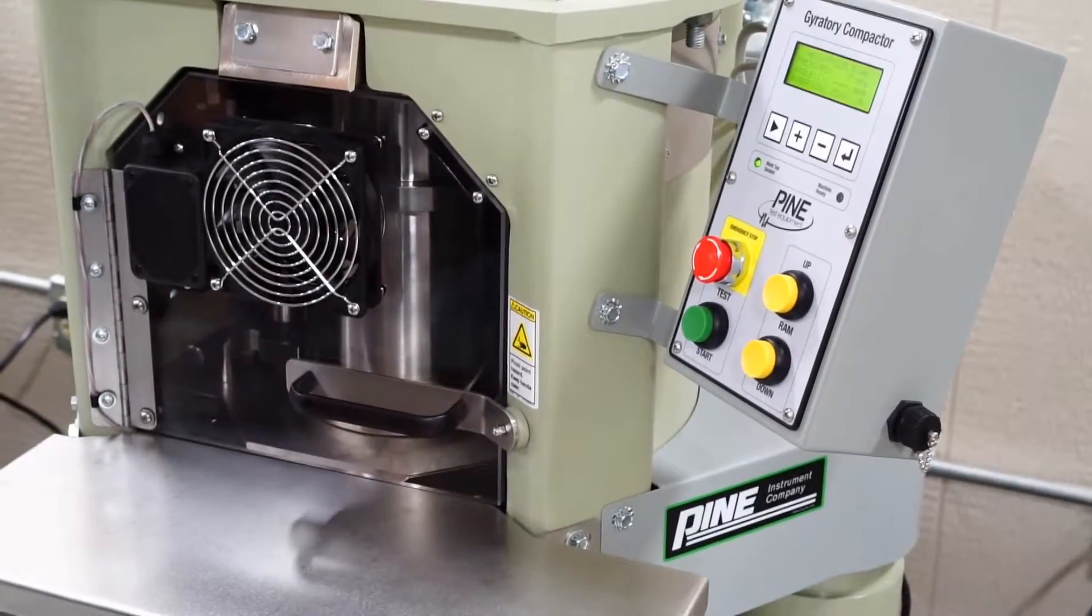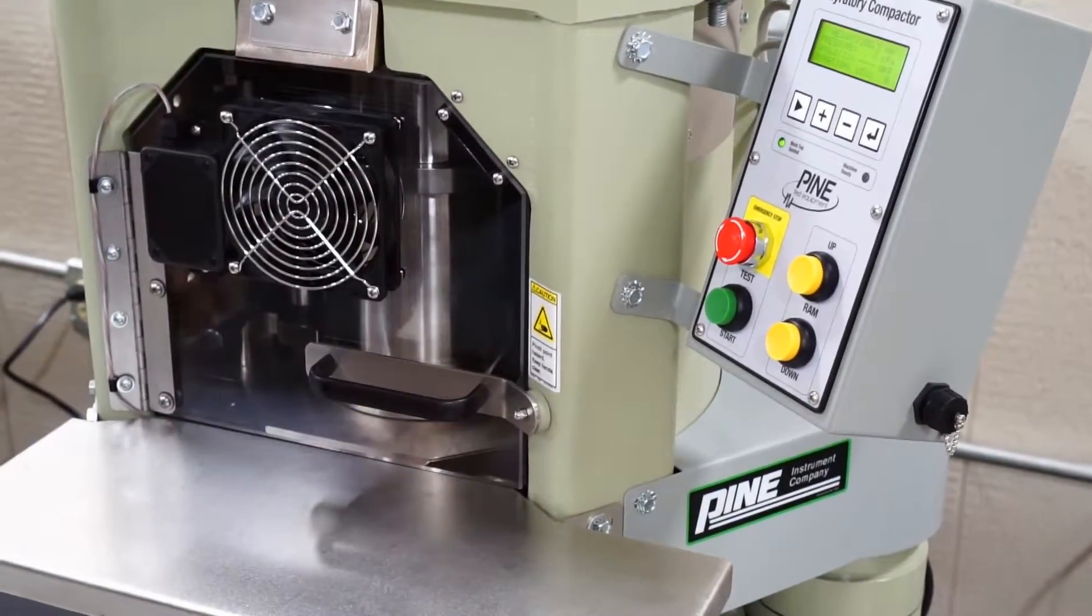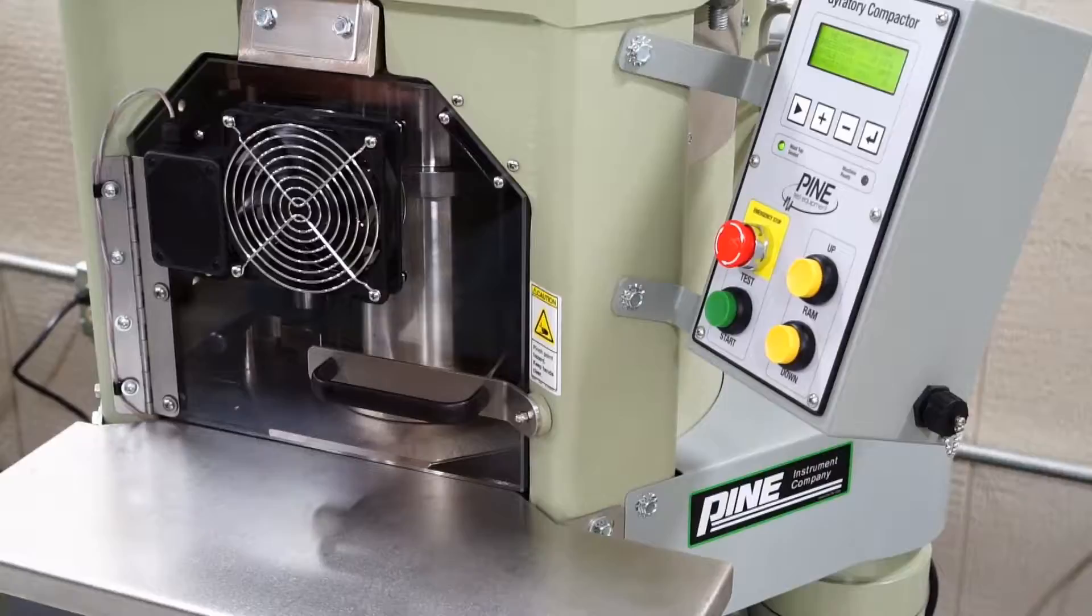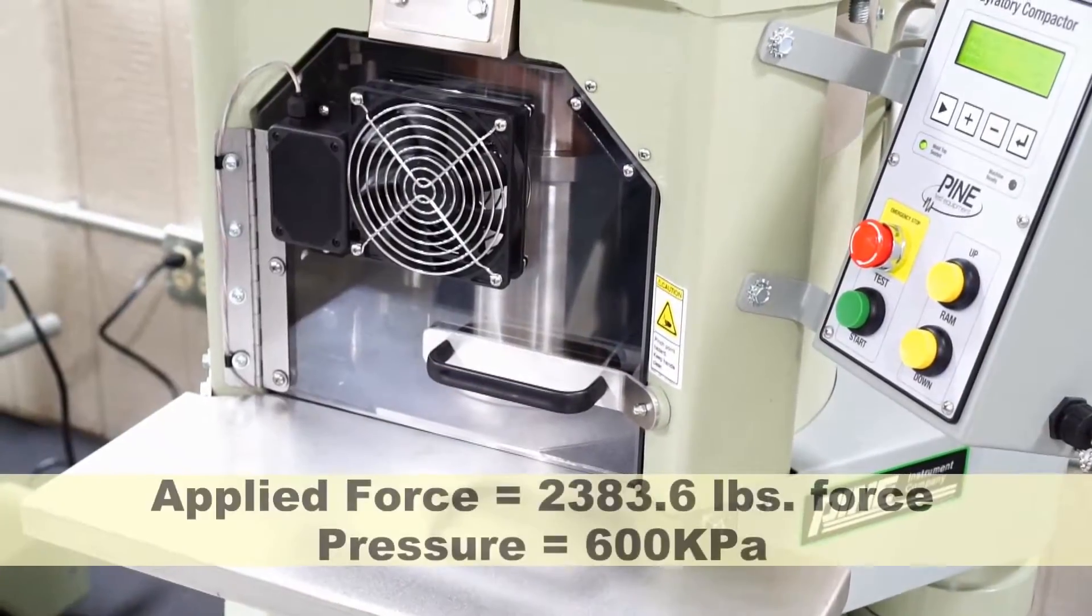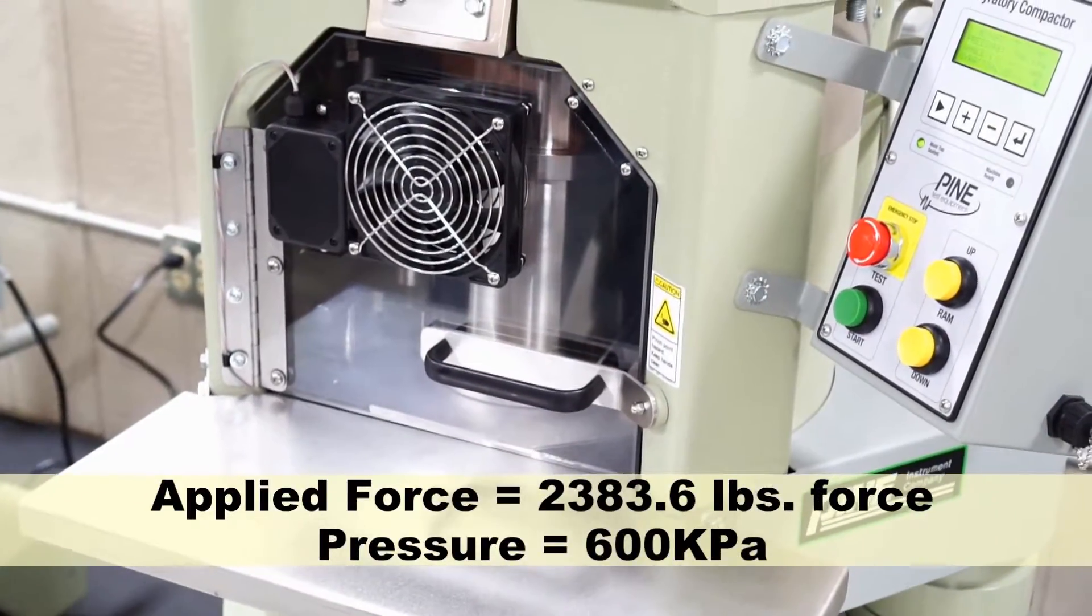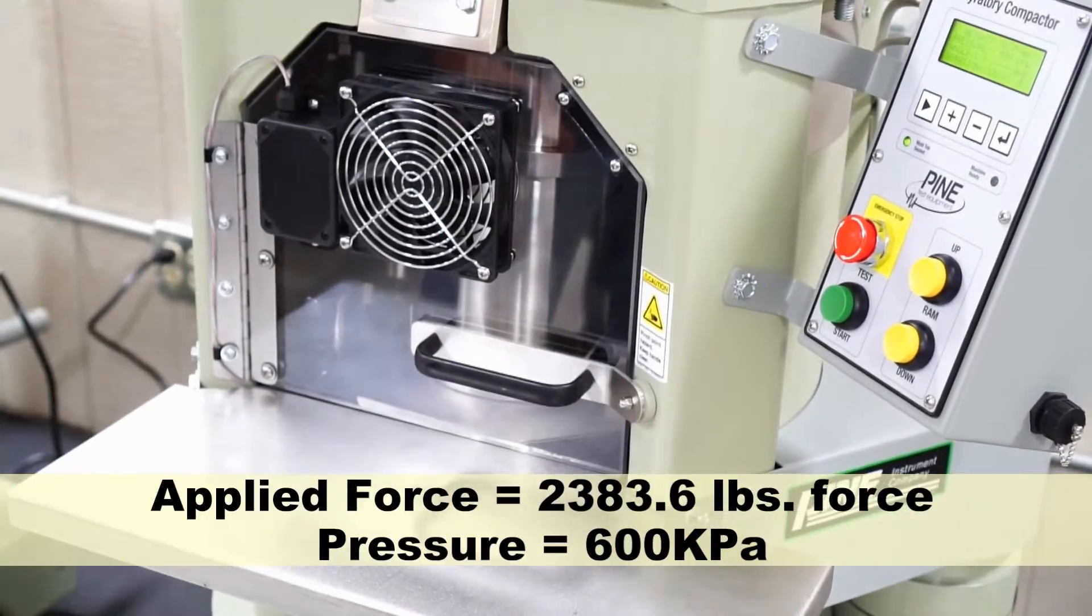Pressure is applied to the specimen via an electrically actuated ram that comes up from the bottom of the machine. The force applied to the specimen is typically 2,383.6 pounds of force.